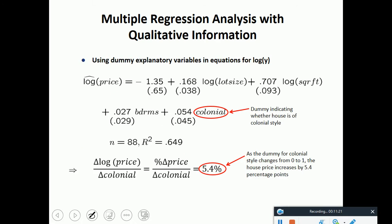Using dummy explanatory variable in equation for log y. If you look at this equation, we have log of price as the dependent variable. And we have lot size, square footage, bedrooms. And this is the type of housing. If the type of housing is colonial, we can see that the housing price is higher. If we do a change in log of price, a change in log of colonial, we would see that the house price increases by 5.4 percentage points. The type of housing, this is the qualitative information again. This is again a dummy variable.